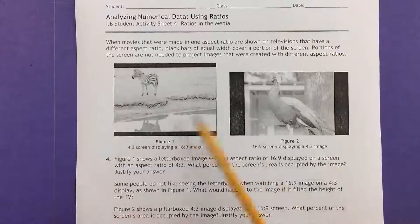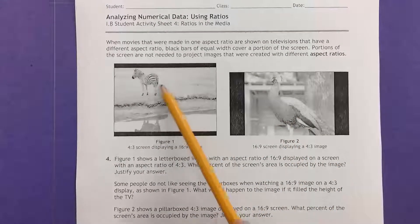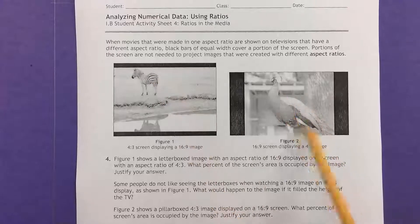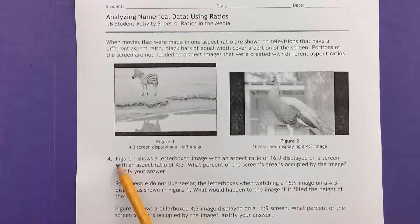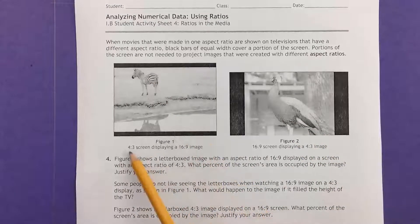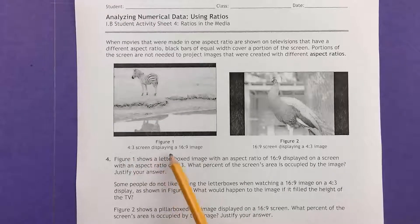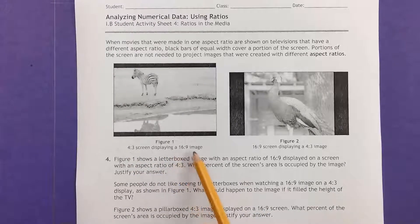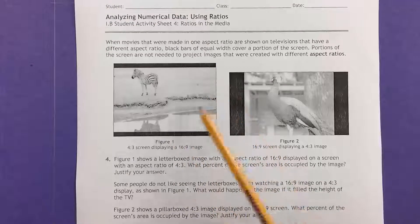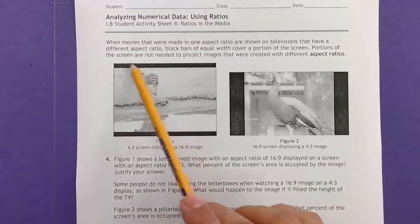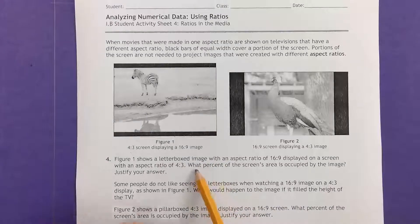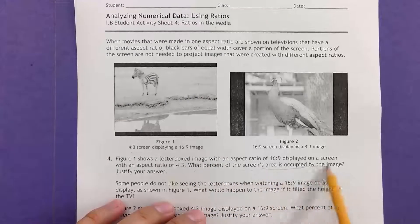Now we have these two images right here, an image of a zebra and a peacock. There's a couple of things about this. We have a 4:3 screen displaying a 16:9 image, so we have the regular screen, then we have these little letterboxes, and they're asking what percent of the screen area is occupied by the image, and that's pretty easy to find out.